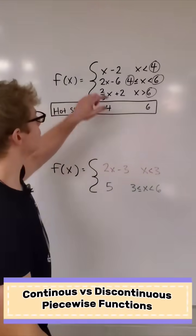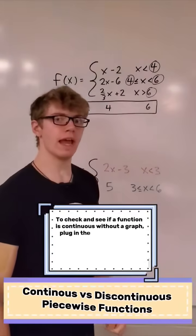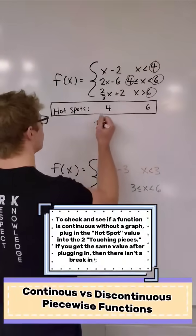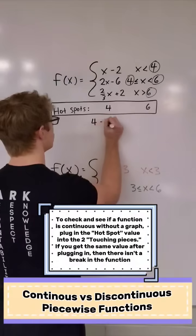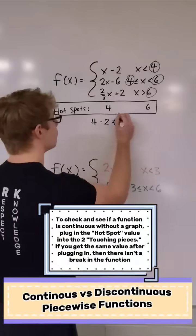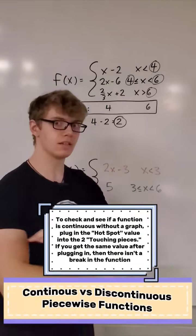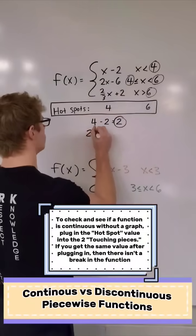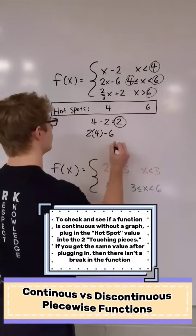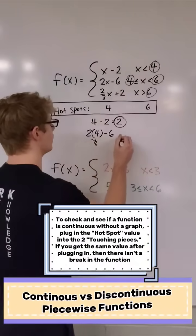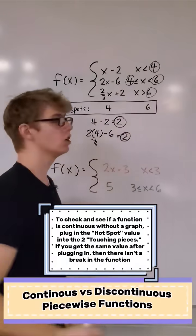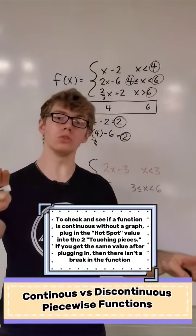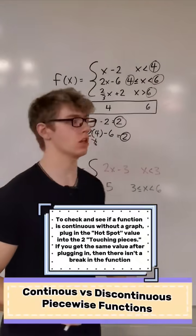So we're going to plug in 4 for both of these and see if we get the same thing. We plug in 4 for the first one: 4 minus 2, and that is equal to 2. If we don't get 2 for the second one, it is not continuous. For the second one, we plug in 2 times 4 minus 6 — that's 8, and 8 minus 6 gives us 2 as well. So we're safe for the first part. If this were on a graph, we would see these two parts of our function intersecting each other.